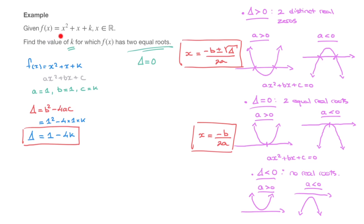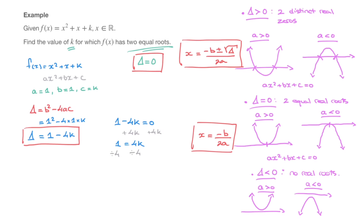Since the quadratic function has two equal roots, delta must equal zero. Since delta equals 1 minus 4k, we set 1 minus 4k equal to zero. Adding 4k to both sides gives 1 equals 4k, then dividing both sides by 4 gives k equals one quarter. Provided k equals one quarter, this quadratic function will have two equal roots.